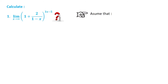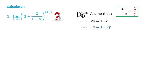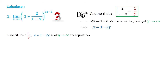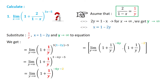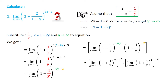Problem 1: We assume that x equals 2, 1 minus 2x, and y goes to infinity. Substitute, we get the result e ranked minus 6.